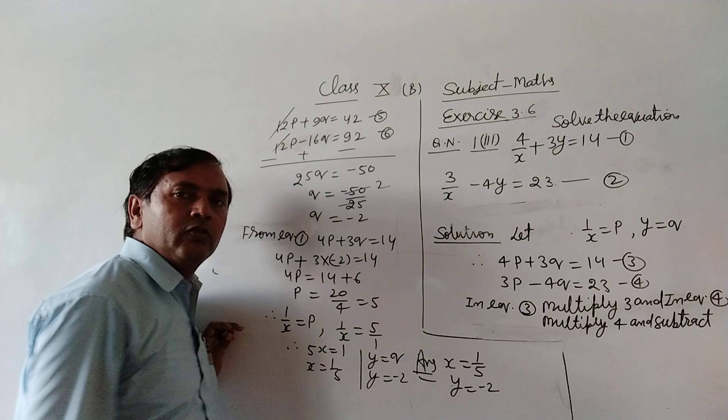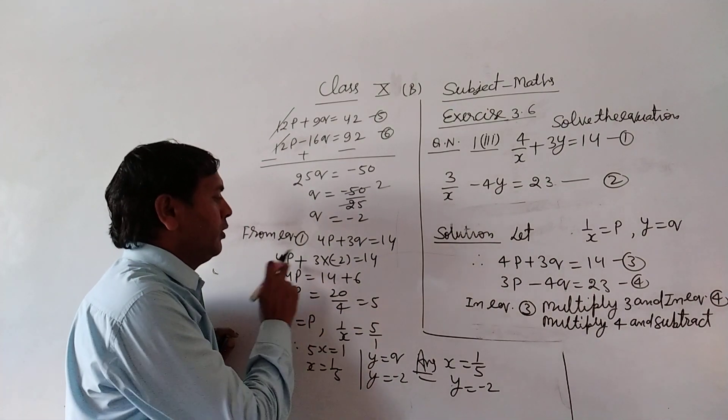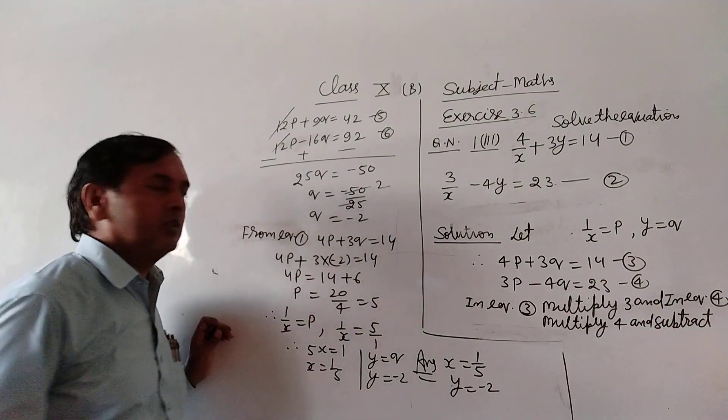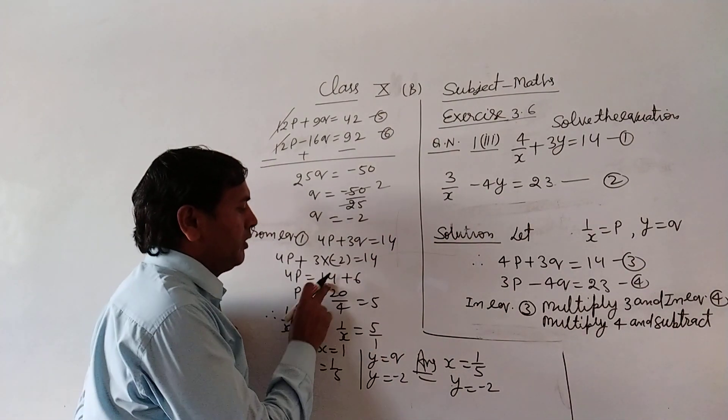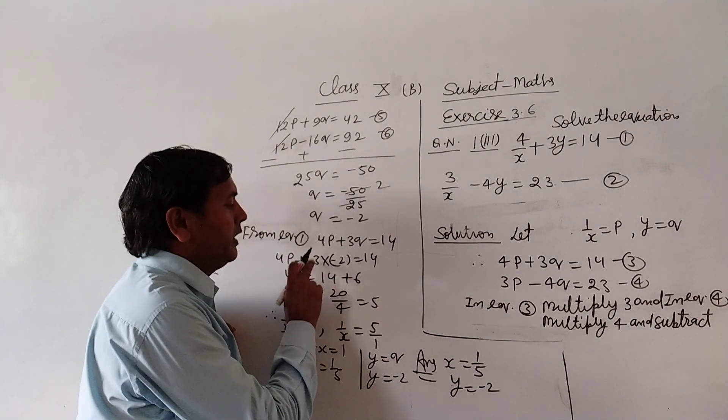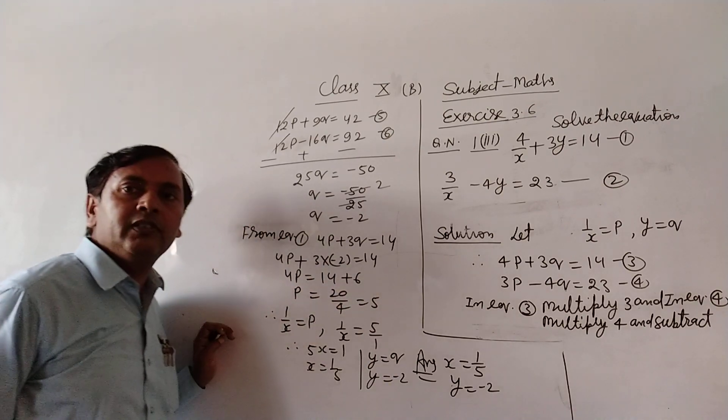So 4p plus 3q equals 14. 4p equals 14 minus 3 into q, which is minus 3 into minus 2 equals 6. Sign change.